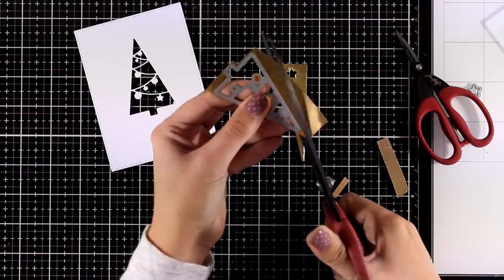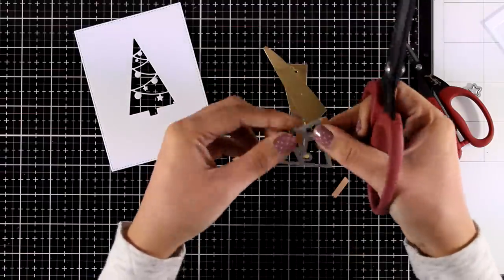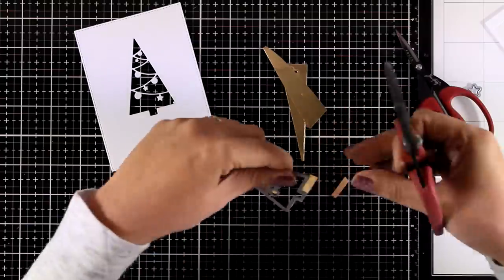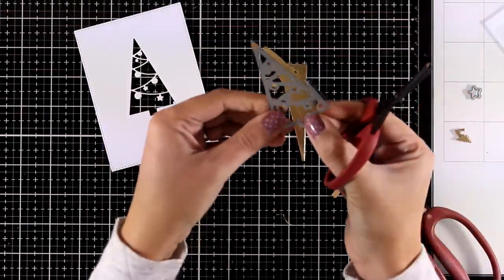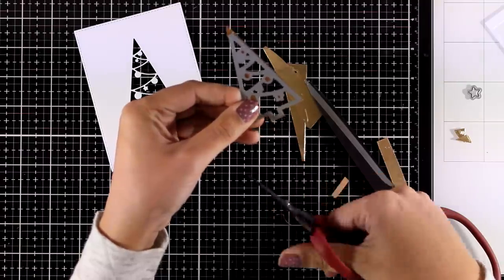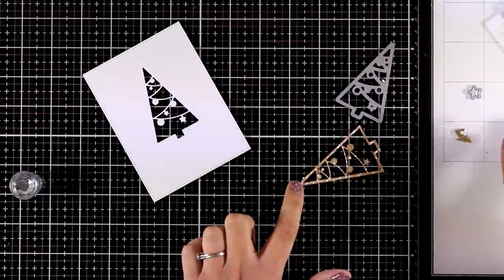Now the easiest way that I found to create this is if you put the die on top of your die cut and then just follow the outline with your scissors. So here is my little frame ready to go.